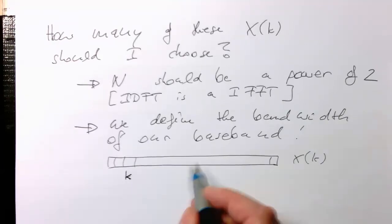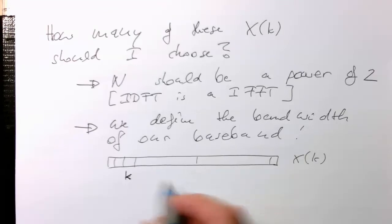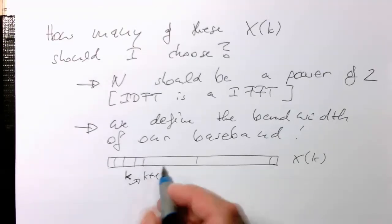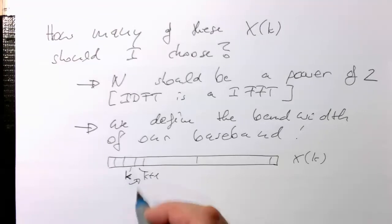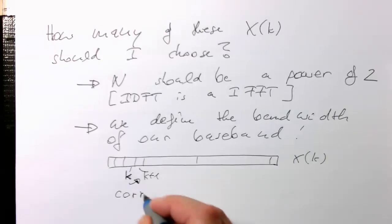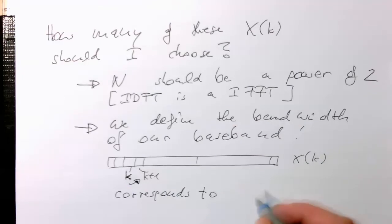That the smallest, let's see, and if we're going from k to k+1, so from here to here, this corresponds to fs divided by N.